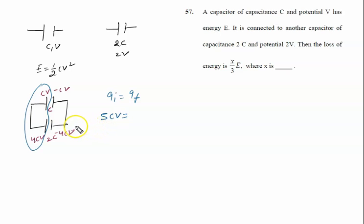Final charge, the net final voltage is V dash. So charge on this upper capacitor is CV dash and lower one is 2CV dash. 5CV equals 3CV dash. V dash is given by 5 by 3 into V.